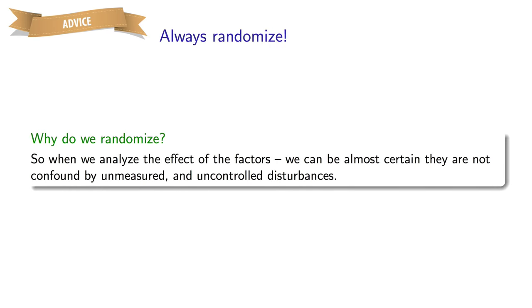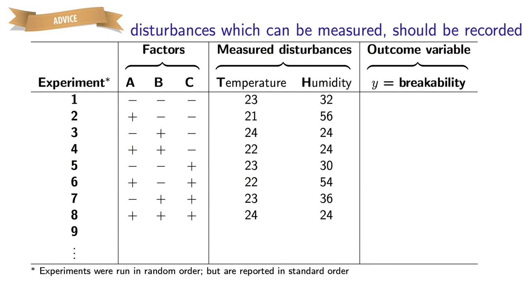However, there are disturbances that we can measure. The advice here is that you should record such variables and add them to your table of results as extra columns. In the baking example, I may not be able to control the temperature in my house, but I can still measure it. It might be possible that I could measure the humidity. Humidity plays an important role for certain baked products. And if I can measure it, I should do so and add it to my table.